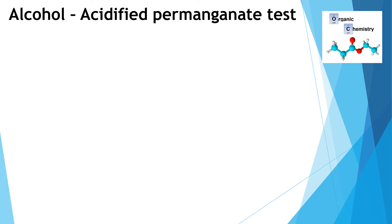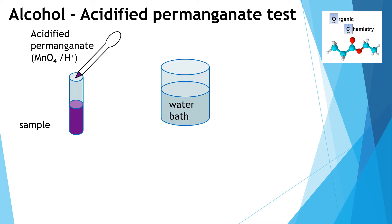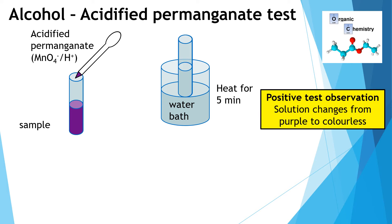The next test is how to test for an alcohol — specifically primary and secondary alcohols — using an acidified permanganate test. We take a sample of an alcohol, add permanganate with acid added to it (MnO4⁻/H⁺), and place the sample in a water bath over a Bunsen burner at around 80°C for five minutes. If there is a primary or secondary alcohol present, it will go colourless. The positive test for a primary or secondary alcohol is that acidified permanganate goes from purple to colourless.